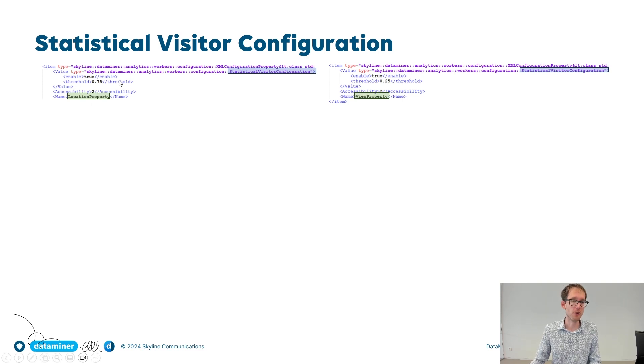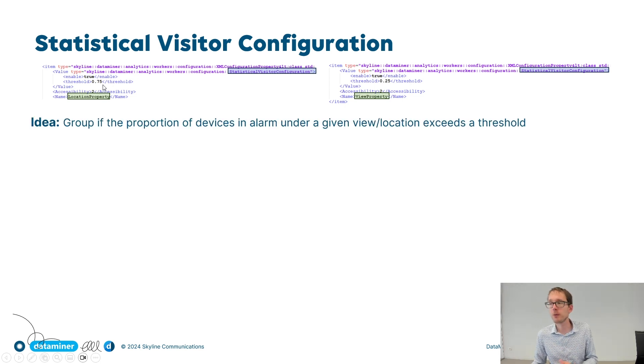Next, we have our threshold field. And that's really the key of statistical grouping. What's the idea behind this threshold field? Well, assume that you have a location, say a certain building in the Netherlands. And assume that 90% of your devices in the Netherlands in that building have alarms, then maybe there's not really a problem with the devices. Maybe the root cause of the problem is that there's something wrong with the building. Maybe the cooling is not working. So in this case, it makes sense to group those alarms together. However, if only five percent of the devices in this building in the Netherlands have alarms, then probably the root cause is not related to the building. Then probably it really has to do with the devices. That's the idea behind statistical grouping.